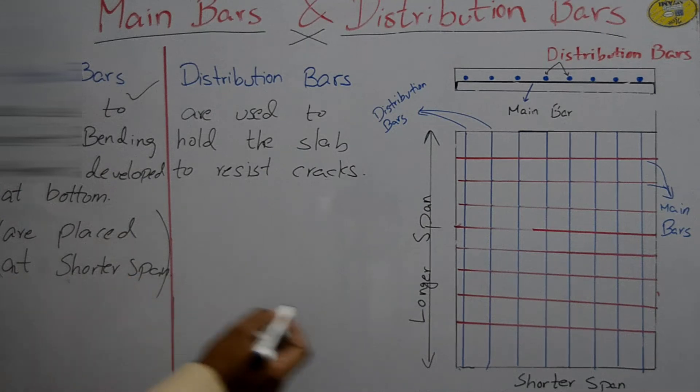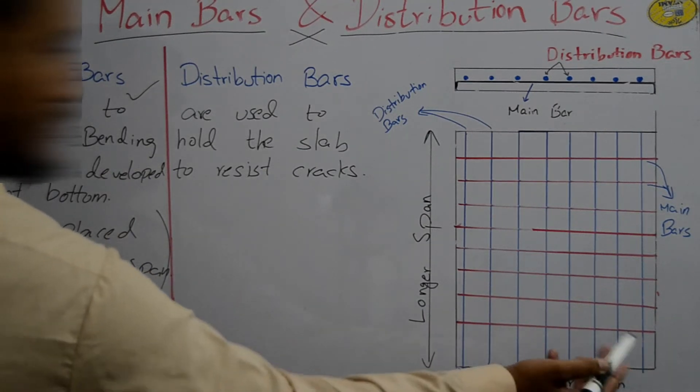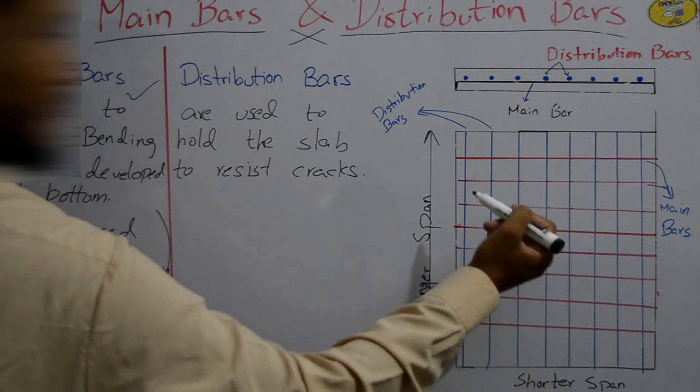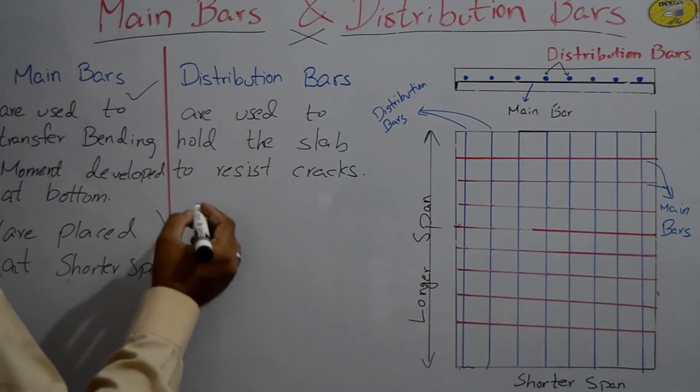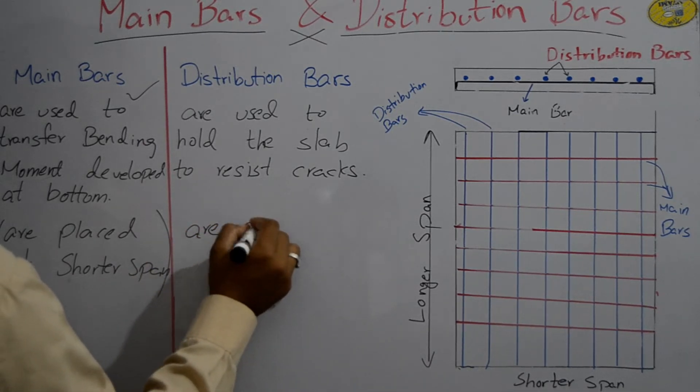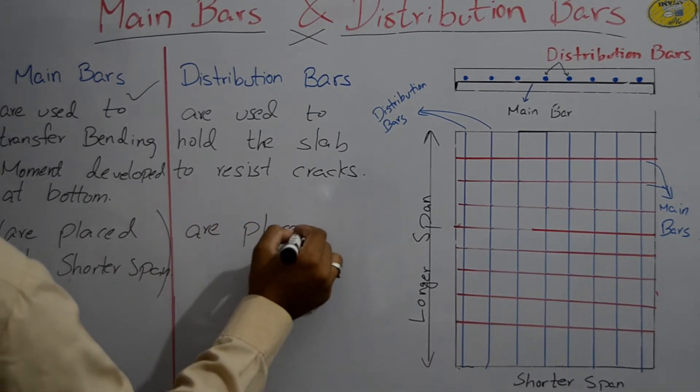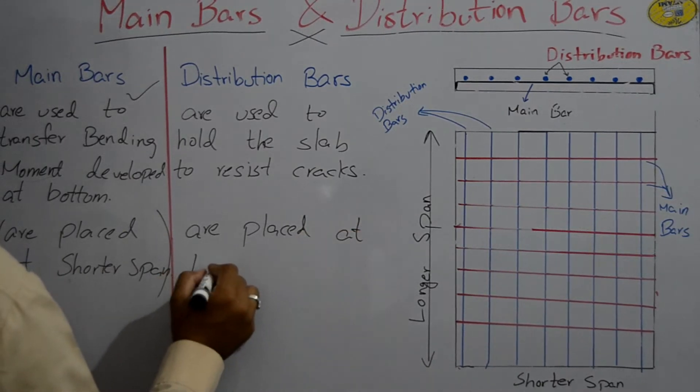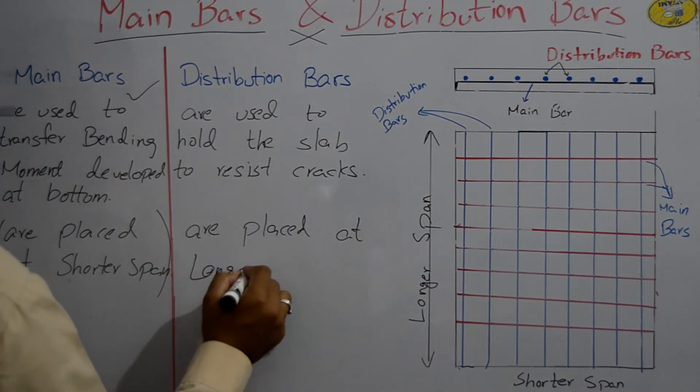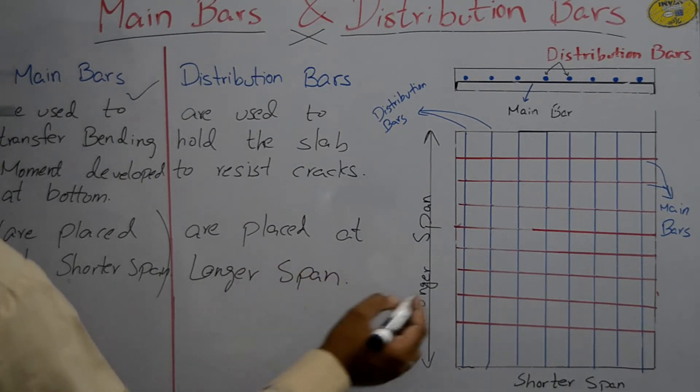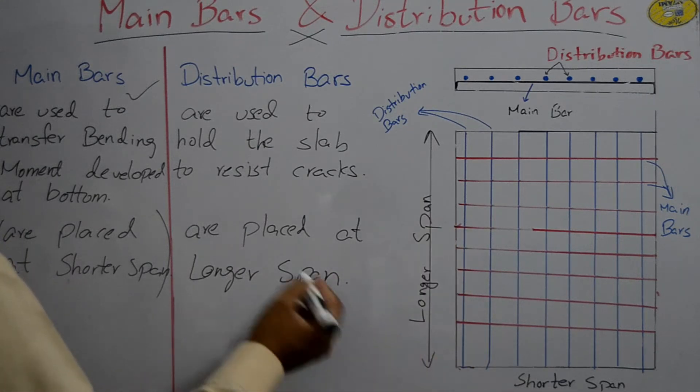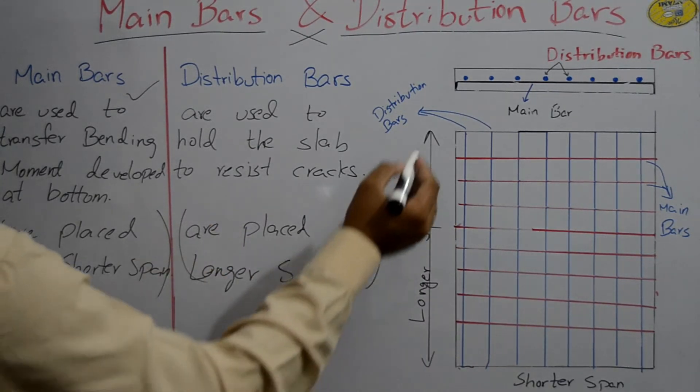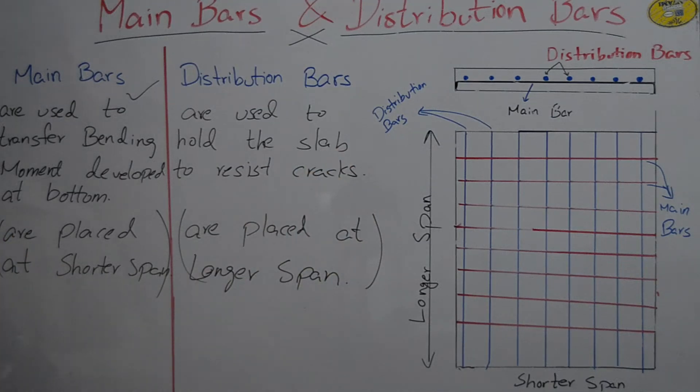Distribution bars are placed at longer span. This is longer span, so the bars will be longer span and will be your distribution bars.